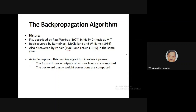This was a problem that held things back for a long time, compounded by Minsky and Papert's criticism of MLPs. In the mid-1970s, Paul Werbos did a PhD on this topic at MIT and derived a very elegant learning rule that overcomes the locality problem, but it was ignored because nobody was interested at the time. It was subsequently rediscovered by Rumelhart, McClelland, and Williams in 1986, and just before that in 1985 by Parker and LeCun independently.